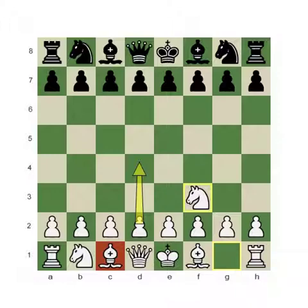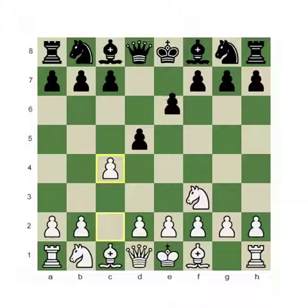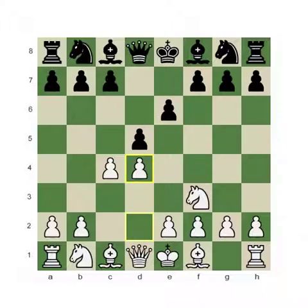Nf3 also allows white to go into different structures, for example the English opening with c4. For this reason the most active move for black is d5. White then plays pawn to c4, transposing into the Reti opening. Black played pawn to e6, supporting the pawn on d5, and white then played pawn to d4. From these various transpositions we arrived at the normal position of the Queen's Gambit Declined.